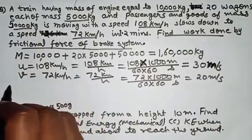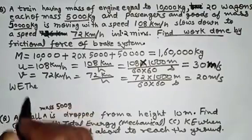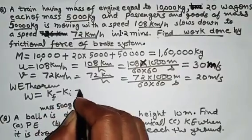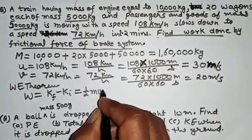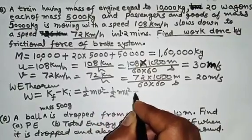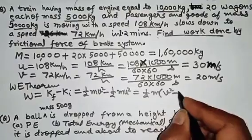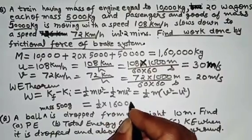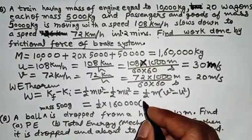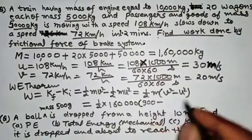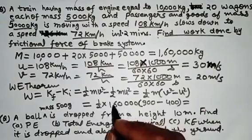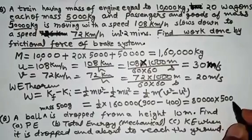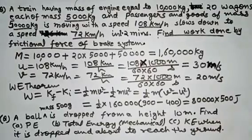Work done equals change in kinetic energy: W = ½mv² − ½mu² = ½m(v² − u²). So W = ½ × 160,000 × (30² − 20²) = ½ × 160,000 × (900 − 400) = 80,000 × 500. You can multiply this out to get the answer in Joules.